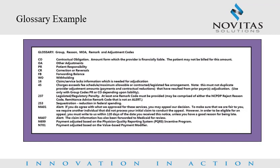The glossary section contains a list of all group codes, reason and remark codes, claim adjustment reason codes, and provider level adjustment reason codes used on the remittance advice. Each code appears with its appropriate narrative. Review this section for an explanation regarding the adjustments your Medicare administrative contractor, or MAC, made on the claims listed on the remittance advice. You may also find a listing of all reason and remark codes and claim adjustment reason codes on the Accredited Standards Committee ASC X-12 website.